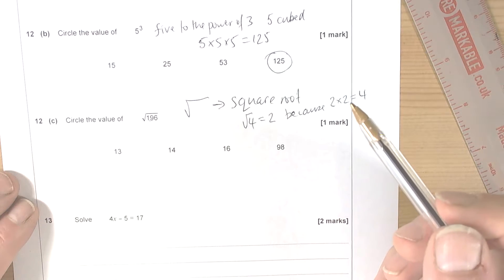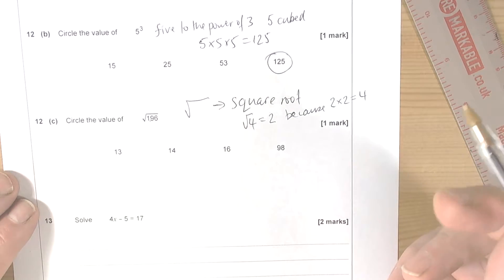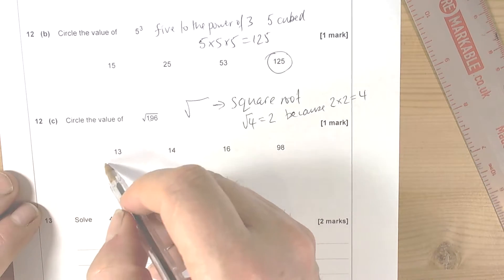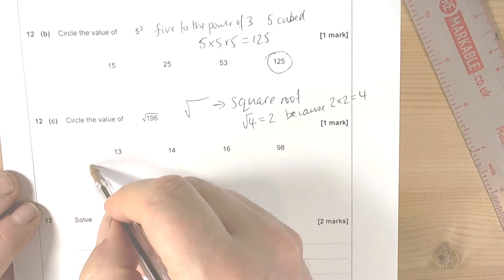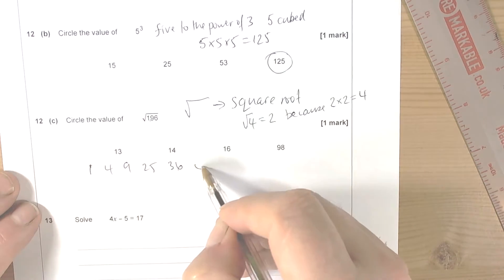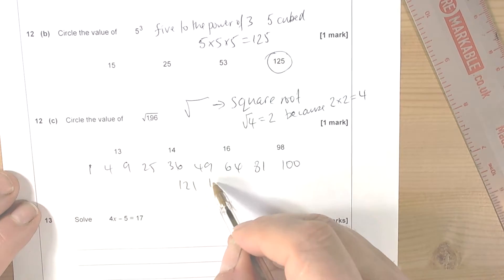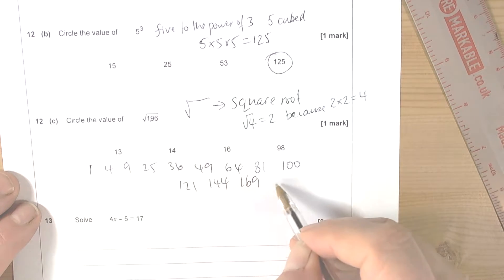Well, you guys are expected to know all your square numbers up to 225. So if you haven't practiced them you need to learn them. And what we should recognize is the square numbers going 1, 4, 9, 25, 36, 49, 64, 81, 100, 121, 144, 169, 196, 225.